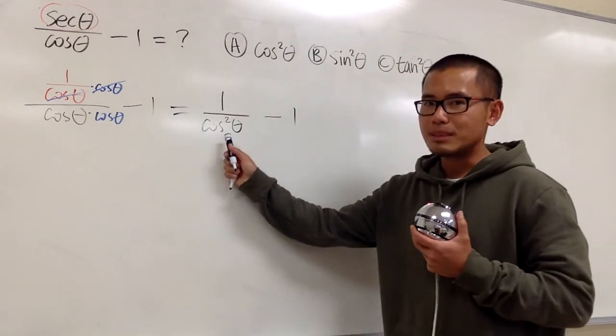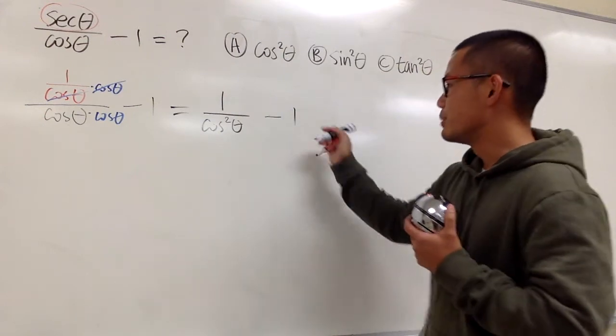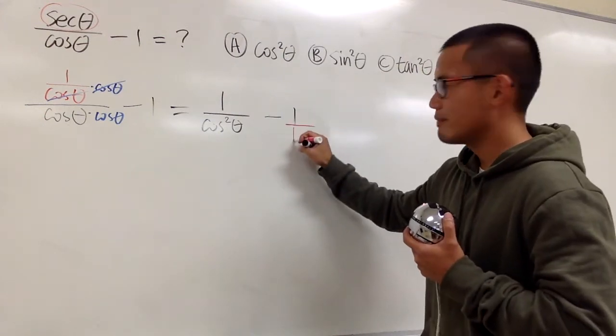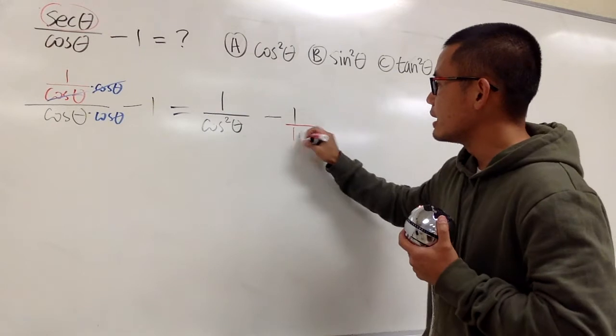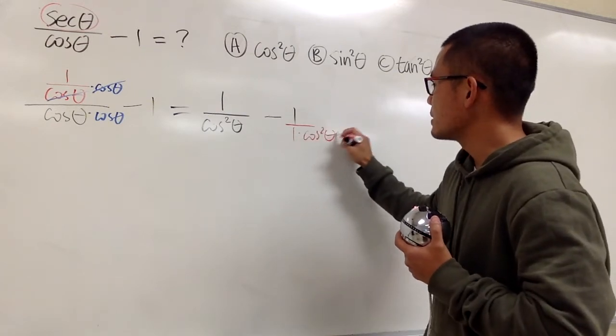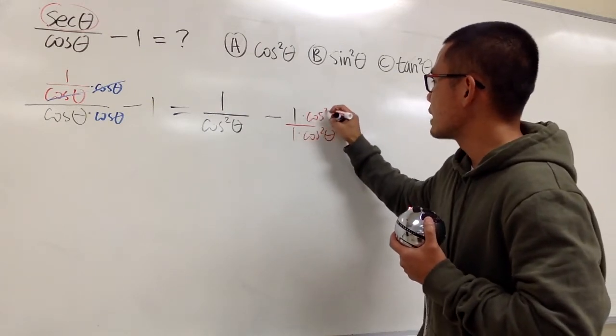And now, we have to subtract fraction in this. So let's put on the 1 as 1 over 1, and let's multiply this by cosine squared theta on the bottom here, and do the same on the top.